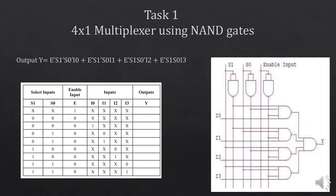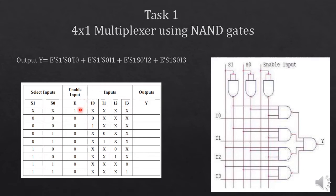Lab task number one is to implement a 4x1 multiplexer using NAND gates. This is the equation of a 4x1 multiplexer that you have already studied in class. The circuit has two selection inputs, four input lines, and an enable pin. The enable pin is used to turn on the circuit; it works on inverted logic. When the enable pin is 1 no data will be transferred to the output; when the enable pin is 0 the data will be transferred to the output.